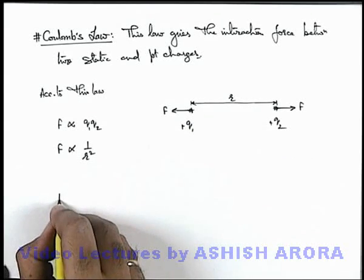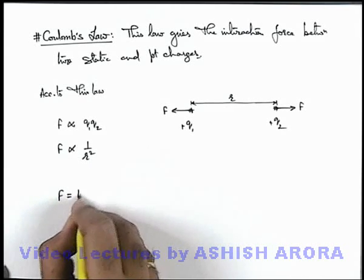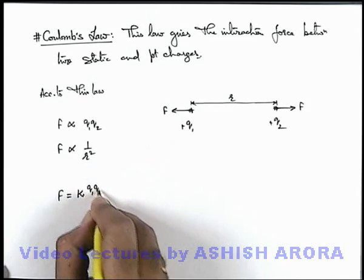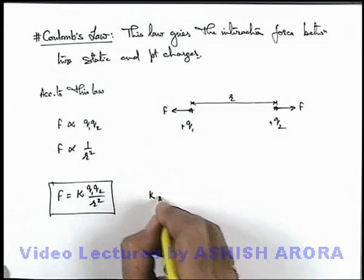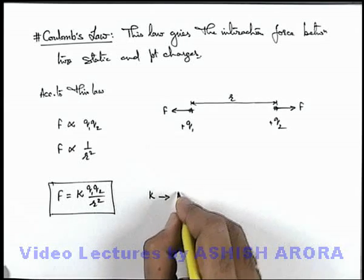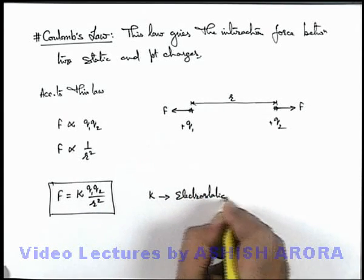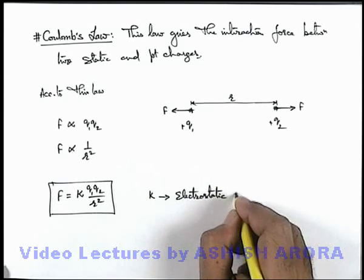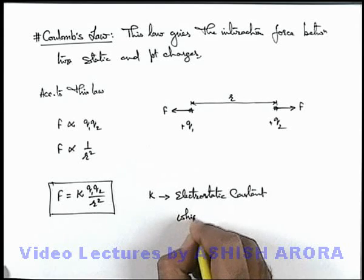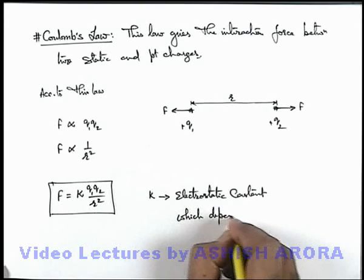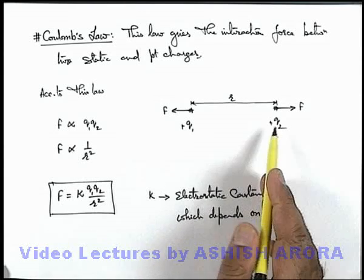And here if we combine the two expressions of proportionality, it gives F is equal to k q1 q2 by r square. And in this situation here k we call a proportionality constant. This is termed as electrostatic constant, which depends on medium in which the charges are submerged.